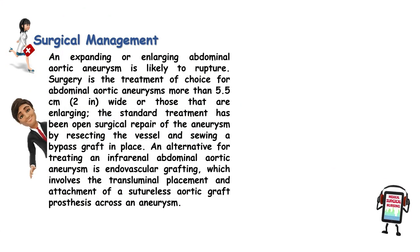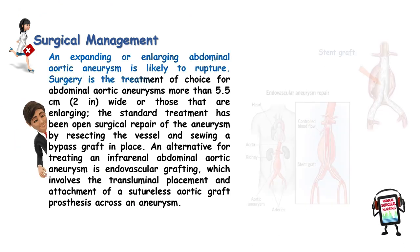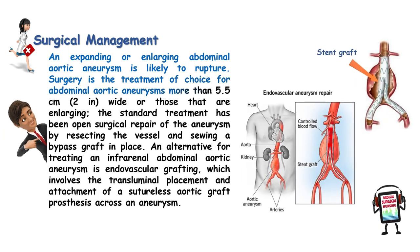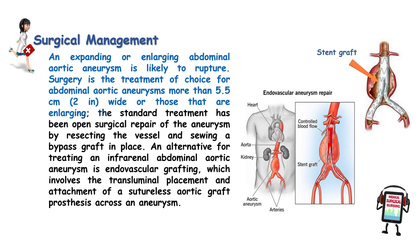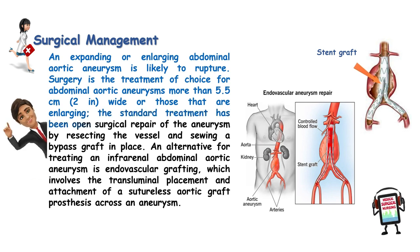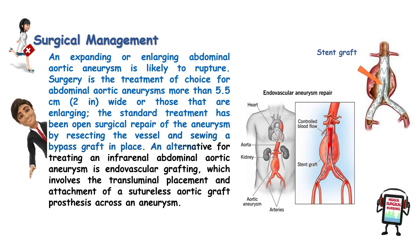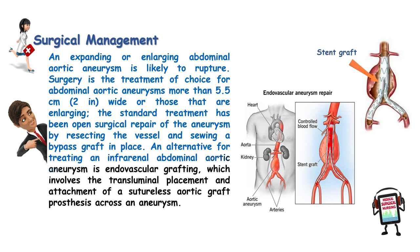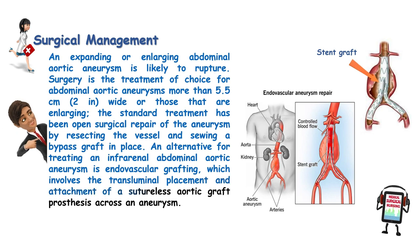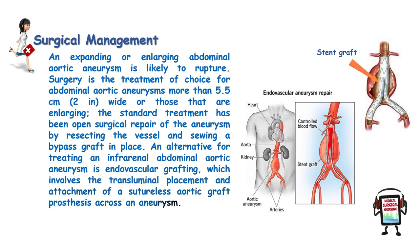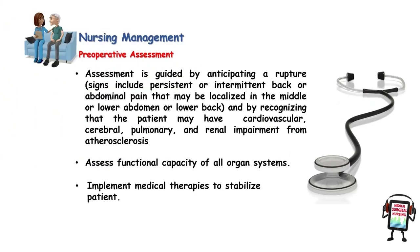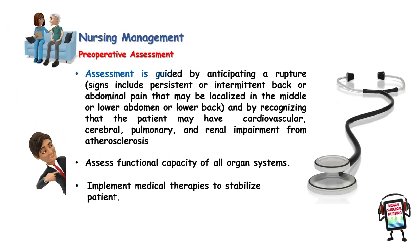Surgical management: an expanding or enlarging abdominal aortic aneurysm is likely to rupture. Surgery is the treatment of choice for abdominal aortic aneurysms more than 5.5 centimeters or 2 inches wide, or those that are enlarging. The standard treatment has been open surgical repair by resecting the vessel and sewing a bypass graft in place. An alternative for treating an infrarenal abdominal aortic aneurysm is endovascular grafting, which involves the transluminal placement and attachment of a sutureless aortic graft prosthesis across the aneurysm.